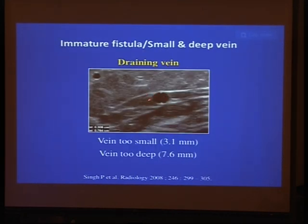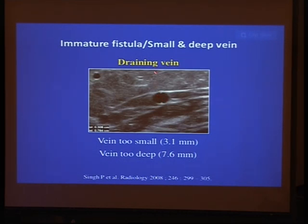This is another example of an immature fistula — the diameter of the vein is less than 3 mm and the distance from the skin is more than 5 mm, indicating an immature fistula.